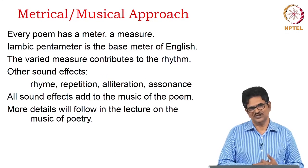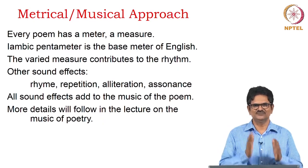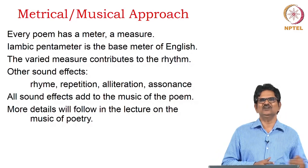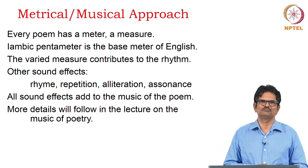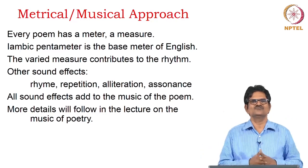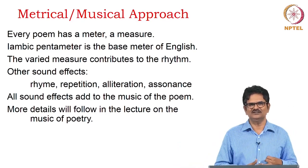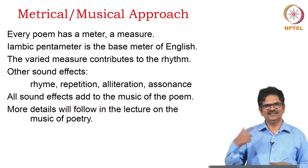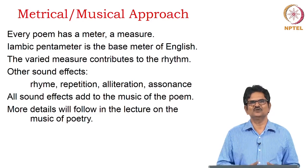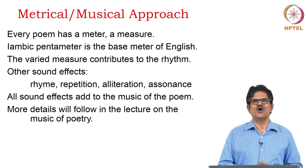Then we can think about the music of poetry. When we want to understand how the poem is musical, we have to look at the metrical form — the meter and the foot that is followed. Every poem has a meter, called a measure. In English, we have the iambic pentameter as a base meter with different kinds of variations. The meter is varied to contribute to the rhythm — that's where we have the up-and-down movement or flow of sound. Rhyme is dominant; certain words, ideas, and sounds will be repeated. There we have alliteration and assonance. All sound effects add to the music of the poem, and we will look at them in another lecture on the music of poetry.